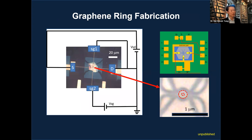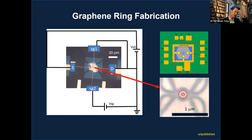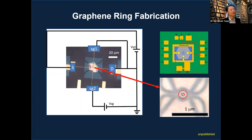We created a graphene ring structure for Aharonov-Bohm oscillations. The SEM shows the ring at center with source-drain electrodes left and right, and side-gate electrodes top and bottom. The chip is wire-bonded into a socket on a chip mount and connected into a cryostat — figuring out the correct wiring, grounding of leads and chassis took more than a year of learning.